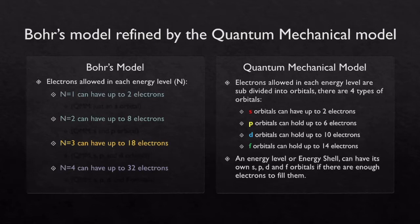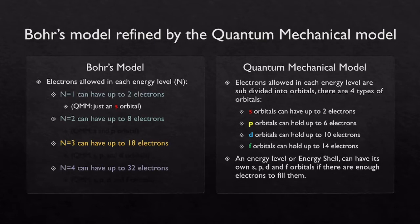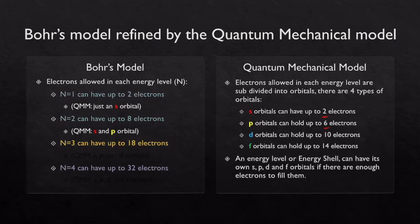Looking at Bohr's numbers and the numbers for the orbitals in the quantum mechanical model, it doesn't really seem like they match up at first. But if we look at Bohr's model, he said the first energy level can hold up to 2 electrons — that just means the first energy level can only have an S orbital, which holds up to 2 electrons. The second energy level can hold up to 8 electrons, so according to the quantum mechanical model, the second energy level has both S and P orbitals, because 2 plus 6 equals 8.